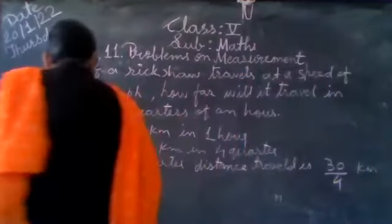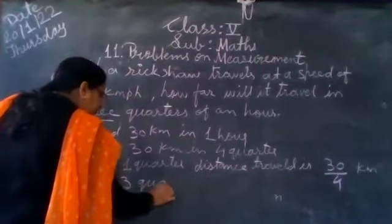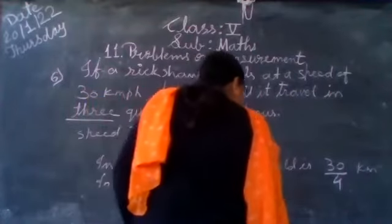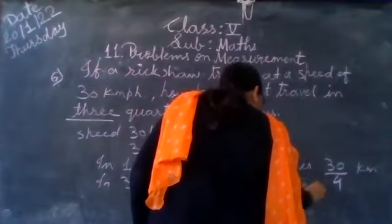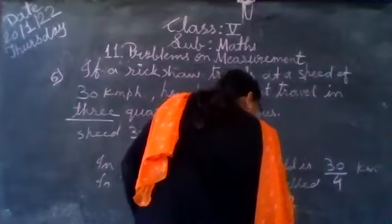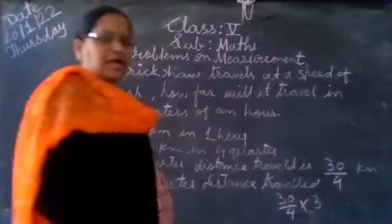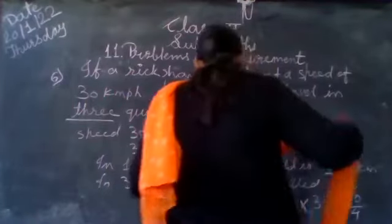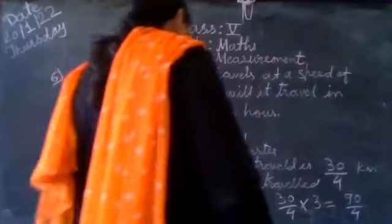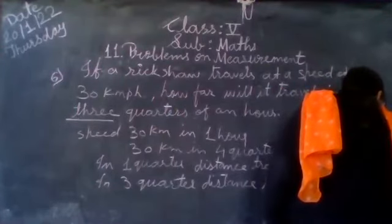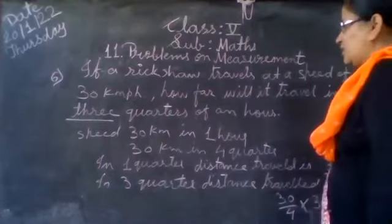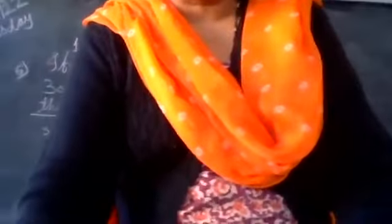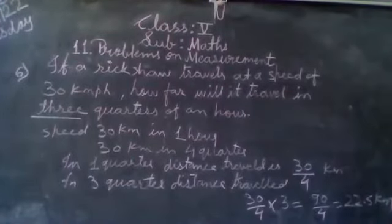So in 3 quarters, the distance covered: 1 quarter is 30 divided by 4. Multiply by 3 to get the answer for 3 quarters. That gives 90 divided by 4, which is 22.5 kilometres. So in 3 quarters of an hour, the auto rickshaw travels a distance of 22.5 kilometres. Got it?